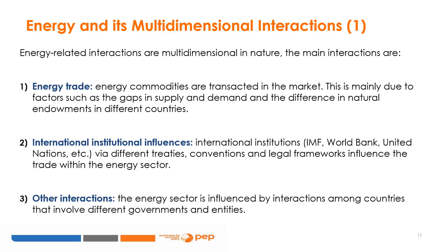Energy-related interactions are often multi-dimensional in nature. The main interactions are: one, energy trade — when energy commodities are transacted in the market, mainly due to gaps in supply and demand and differences in natural endowments across countries. Commodities such as gas (for example, from Russia to the rest of Europe) and electricity (for example, the South Africa power pool) are often traded across borders to smooth supply and demand. Two, international institutional influences — international institutions such as the IMF, World Bank and United Nations, via different treaties, conventions and legal frameworks that influence and regulate trade within the energy sector. Three, other interactions — the energy sector is also influenced by interactions among countries involving different governments and entities.